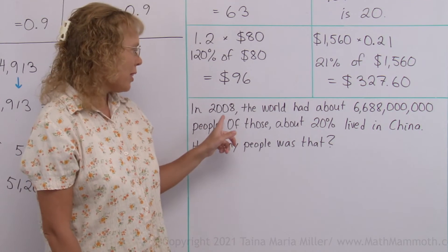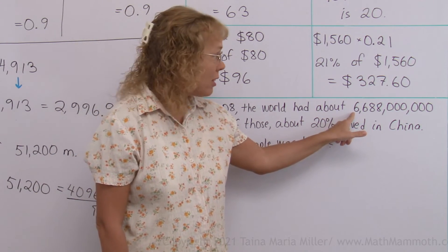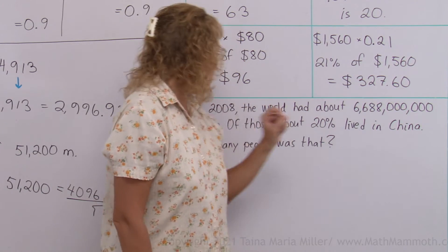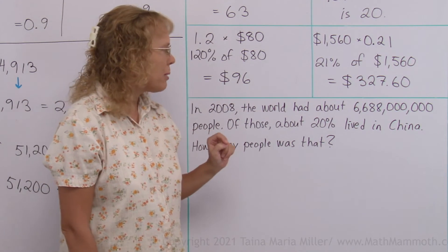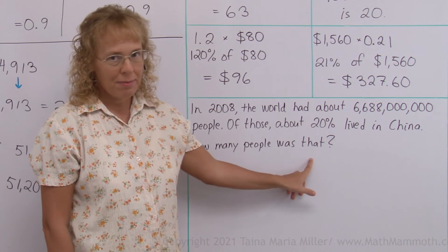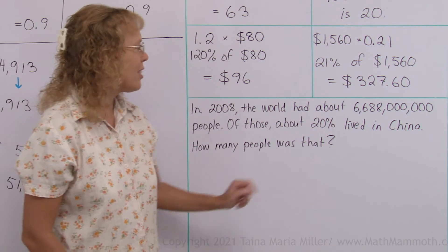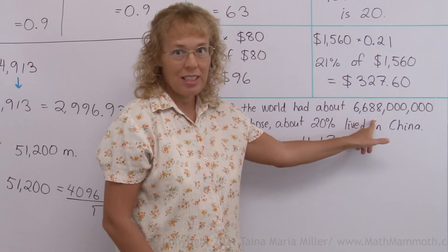In 2008, the world had about 6 billion 688 million people. Of those, about 20% lived in China. How many people was that? We basically need to just find 20% of this number.